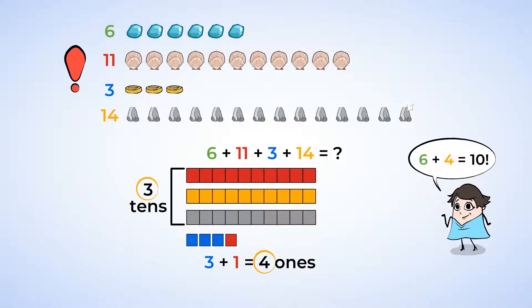Let's put a 3 in the tens place of our answer. So, 6 plus 11 plus 3 plus 14 equals 34. Mia and Will have already collected 34 different items. You did a great job adding them up.